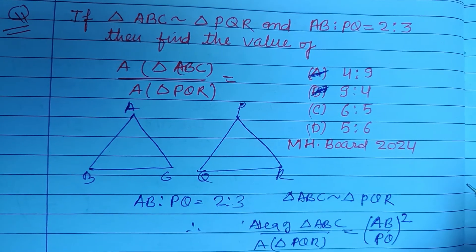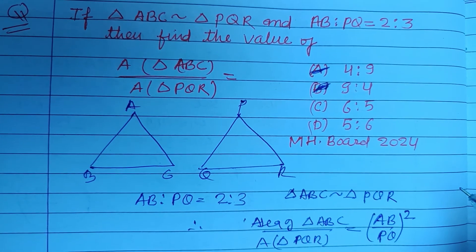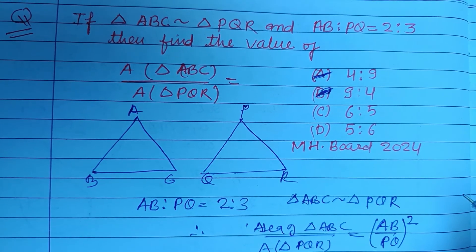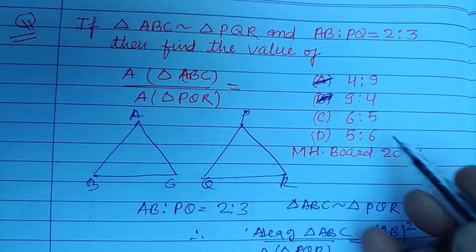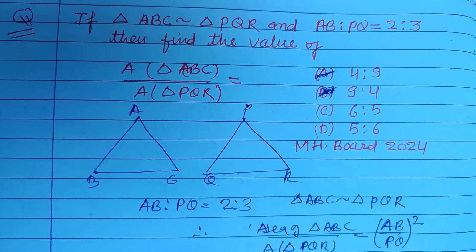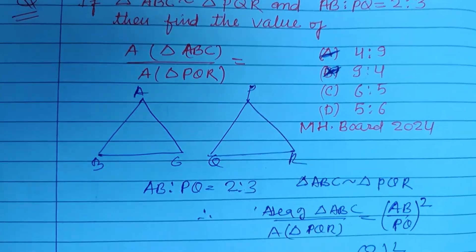The answer is 4 upon 9, or 4 ratio 9. I hope you got it. Please like the video, subscribe to the channel. Thanks for watching.